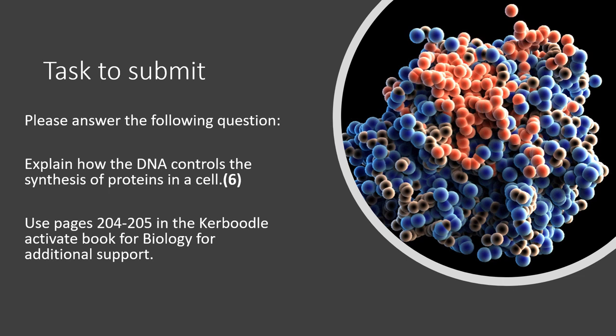That's quite a lot of new information to take in. Most importantly, listen again, read pages 204 and 205 in the textbook, or use additional research to make sure you understand it. There is one six-mark answer question to complete: explain how the DNA controls the synthesis of proteins in a cell — essentially describing in your own words what happens for proteins to be produced from the DNA code. Please get in touch if you need any support. Take care, bye bye.